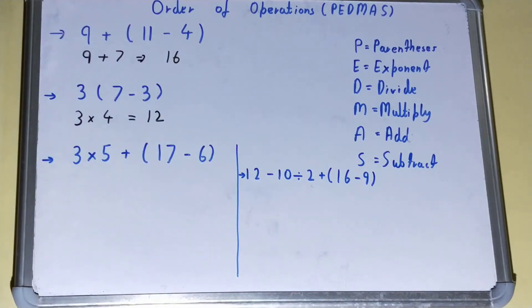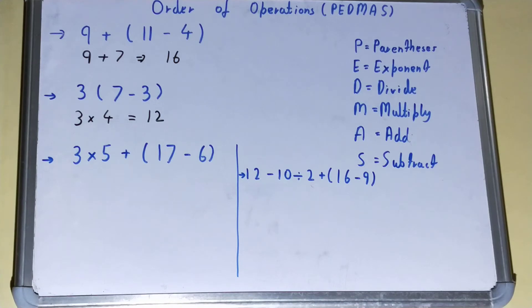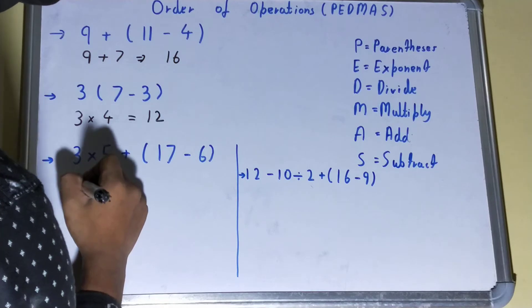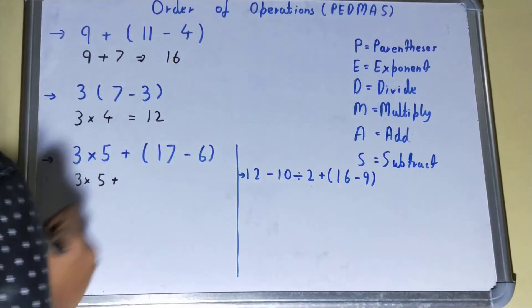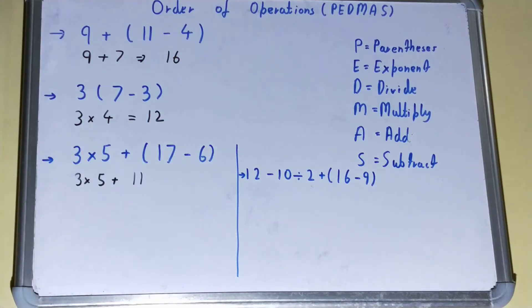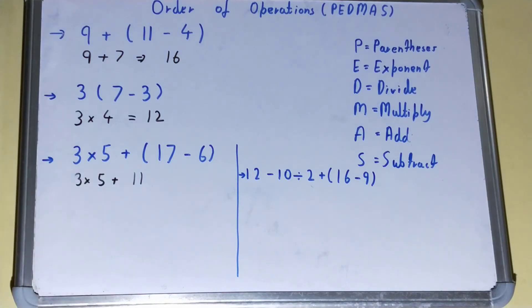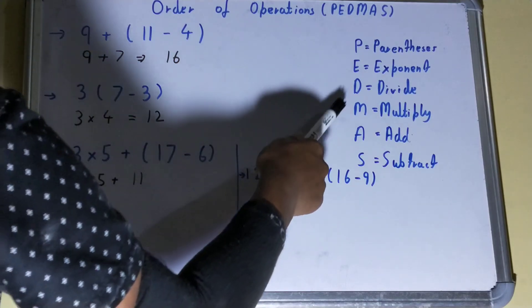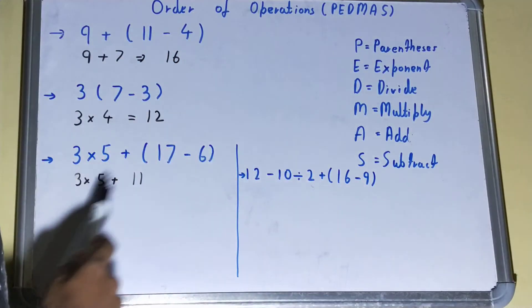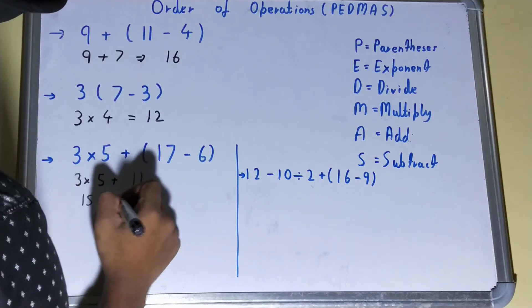Now this is a bit tougher one for you. In this, again we can see the parenthesis is there, so we'll solve the parenthesis first. We don't need to worry about the others. So 17 - 6 will be 11. Now we have two different symbols: first is multiplication and second is addition. So according to your PEDMAS rule, first you need to multiply, then you need to add. So first it will be 3 × 5 = 15, then it will be addition.